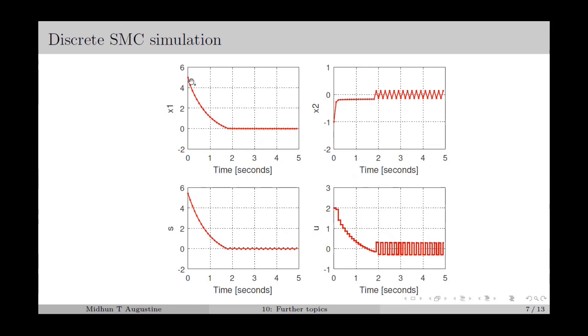State x_1 starts from 5 and converges to 0, while x_2 starts from -1 and also converges to 0. The sliding variable also converges to 0. However, there is oscillation in the states during steady-state, which is discrete-time chattering.